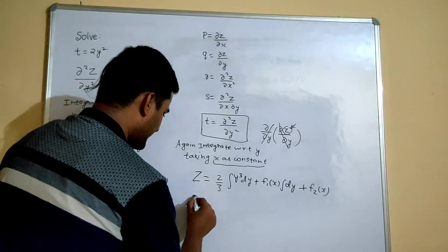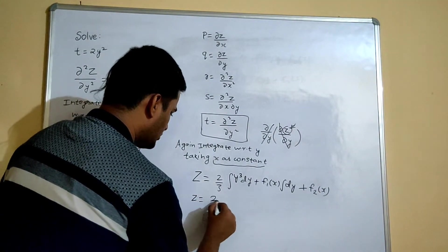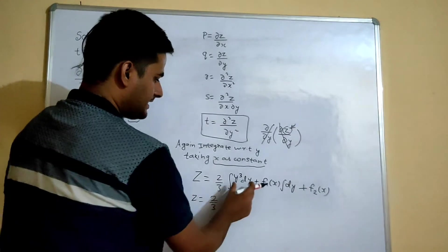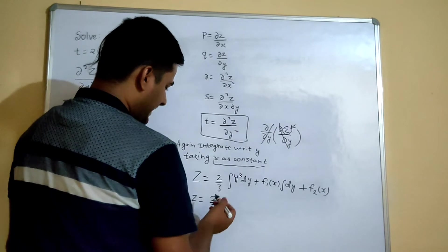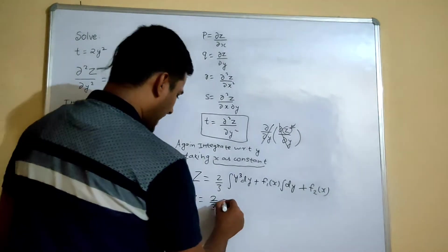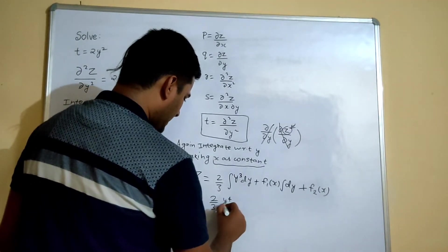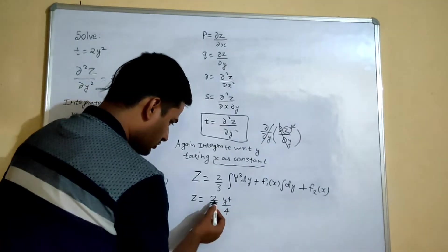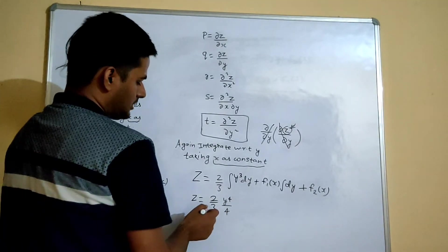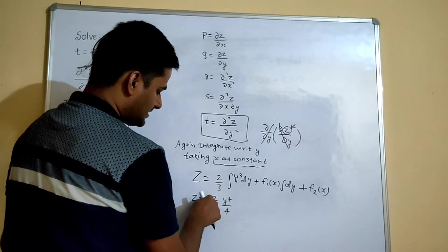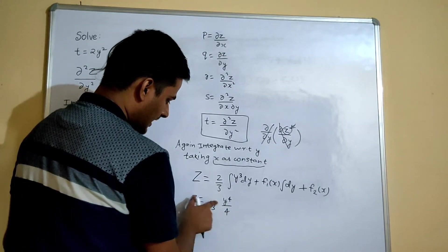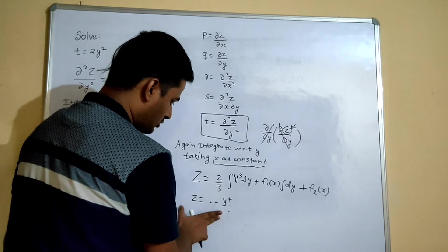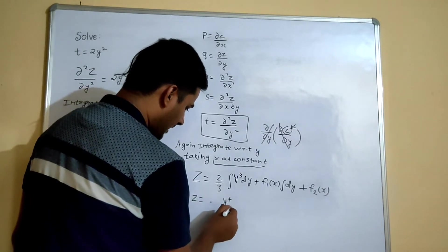Let's simplify things up. So z equals to 2 by 3, integration of y cube is y power 4 by 4. But as you can see that y power 4 divided by 4, so you can cancel this out. So this 2 will vanish, this 4 you will get 2 in denominator, so I am simply writing 3 into 2 which is 6. So y power 4 by 6.